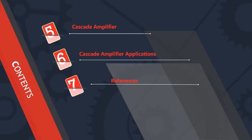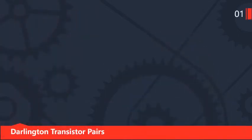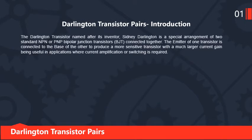Let's start with topic one: Darlington transistor pairs. The Darlington transistor is named after its inventor, Sidney Darlington. It is a special arrangement of two standard NPN or PNP bipolar junction transistors (BJTs) connected together, where the emitter of one transistor is connected to the base of the other to produce a more sensitive transistor with a much larger current gain, useful in applications where current amplification or switching is required.